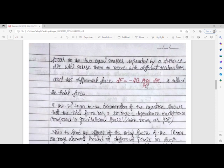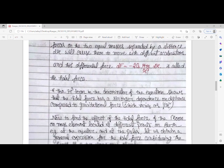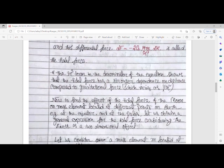This differential force dF = -2GMm/r³ dr is called the tidal force. The term r³ in the denominator shows that tidal force has a stronger dependence on distance compared to gravitational force, which varies as 1/r².